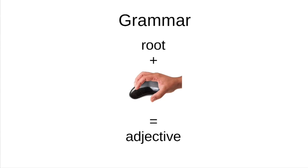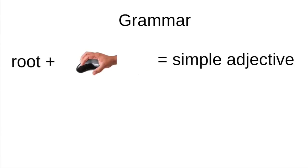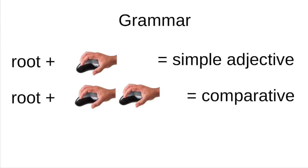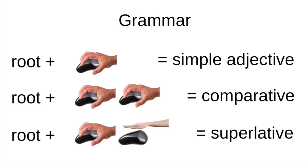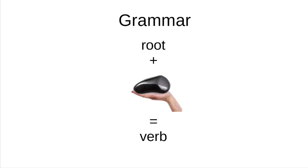Adjectives end with a squeezing obsidian suffix. For the comparative, you lengthen the squeezing of your obsidian. For the superlative, you squeeze obsidian and then pat it. Verbs end with a presenting obsidian suffix. Exceptions include the copula and copula-like words.